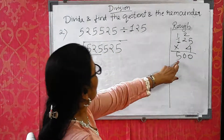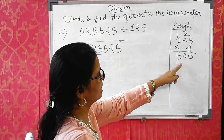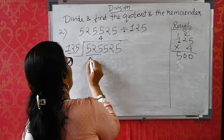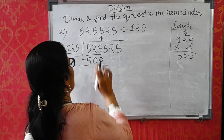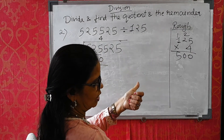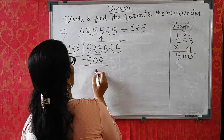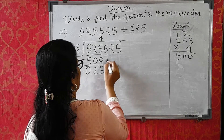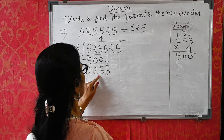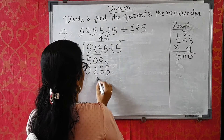125×4=500, which is less than 525. If we do 125×5=625, that is bigger than 525. So it goes by 4 and 125×4=500. Do the subtraction. Take one number down from the dividend. Again 12×2=24, so we try 125×2=250.